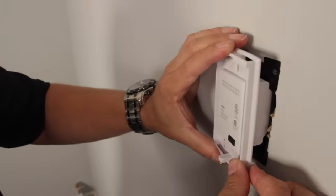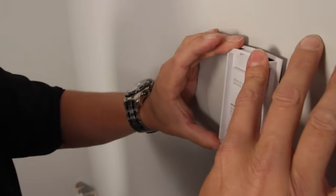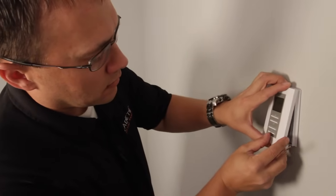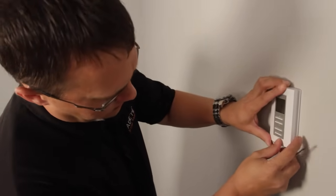Now safely tuck all the wires into the J-box and secure the sub base to the J-box. Attach the thermostat to the sub base and secure with the set screw.